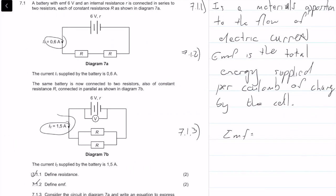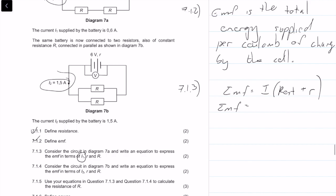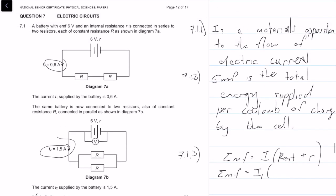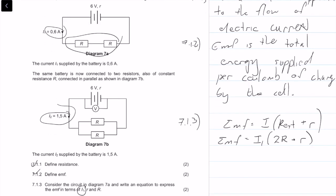So the emf is equal to, this time instead of i we're going to replace it with i1. The r external here is, there's two in series, so it's going to be 2R plus small r. This answer is perfectly acceptable, but if we wanted to, we can also put in values. We know the emf is equal to 6, we know the current is 0.6, so it's 0.6 times (2R plus r).